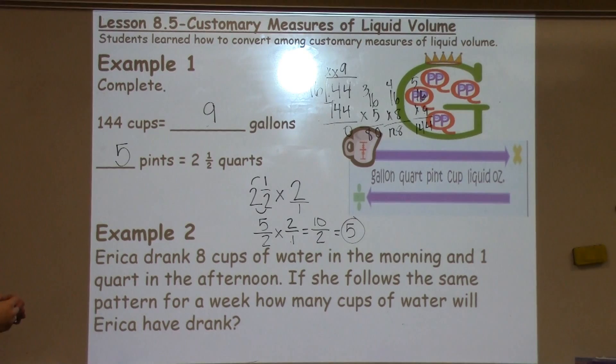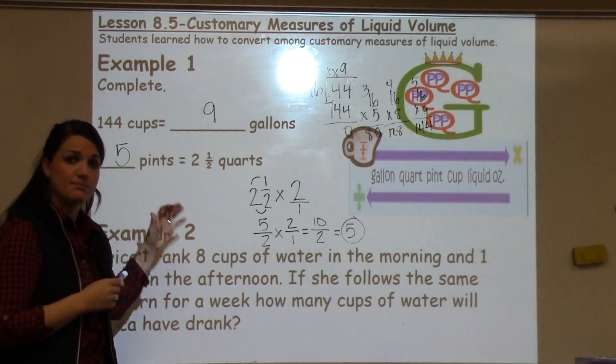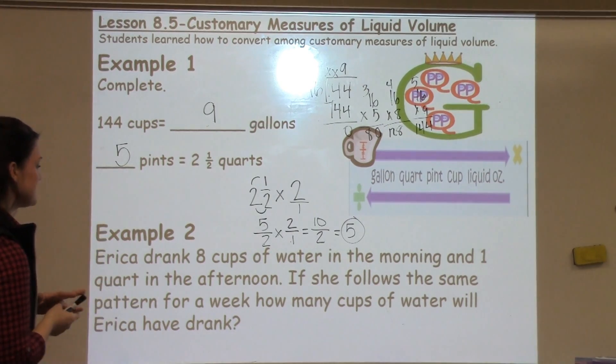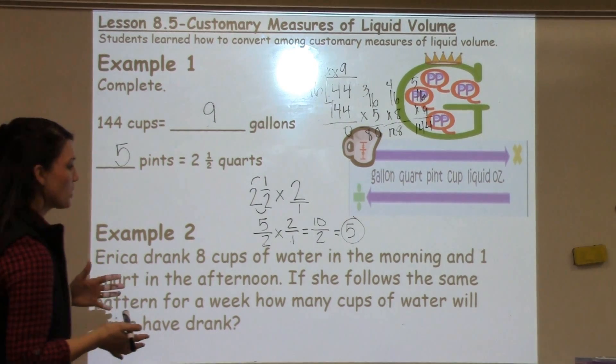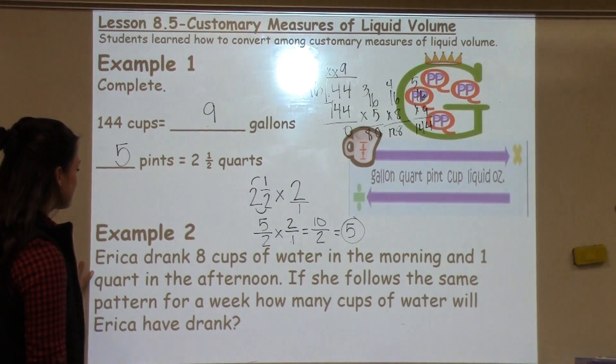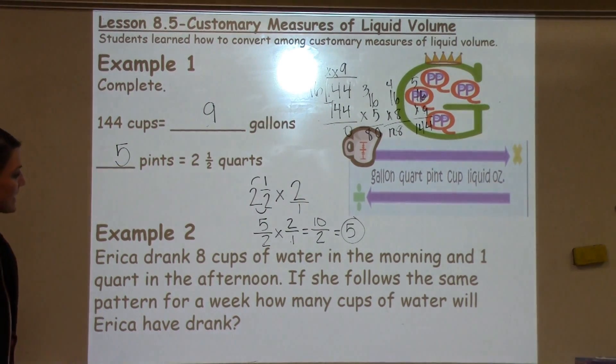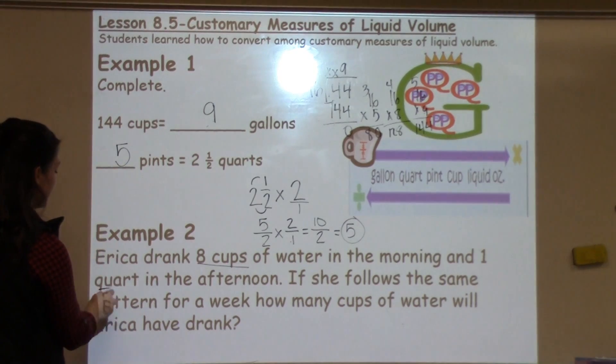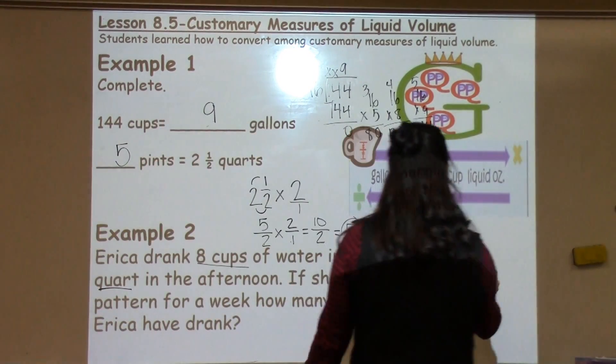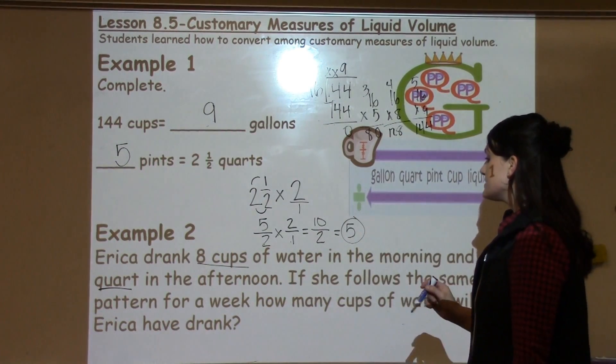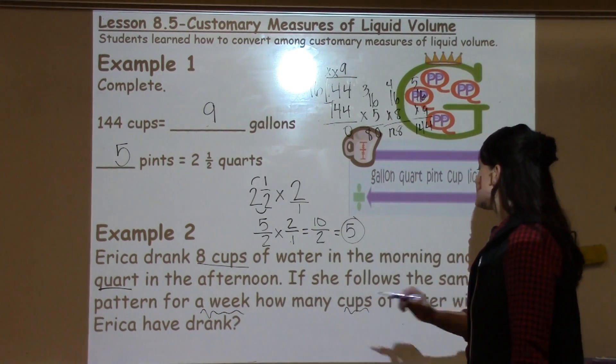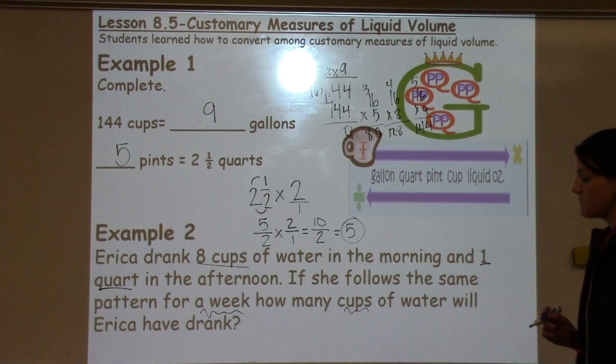Alright, so after students practiced with just some basic conversions using the two tools to help them come up with those conversion problems, they went ahead and applied that then to word problems. So, let's take a look at example 2. It says, Erica drank 8 cups of water in the morning and 1 quart in the afternoon. If she follows the same pattern for a week, how many cups of water will Erica have drank?